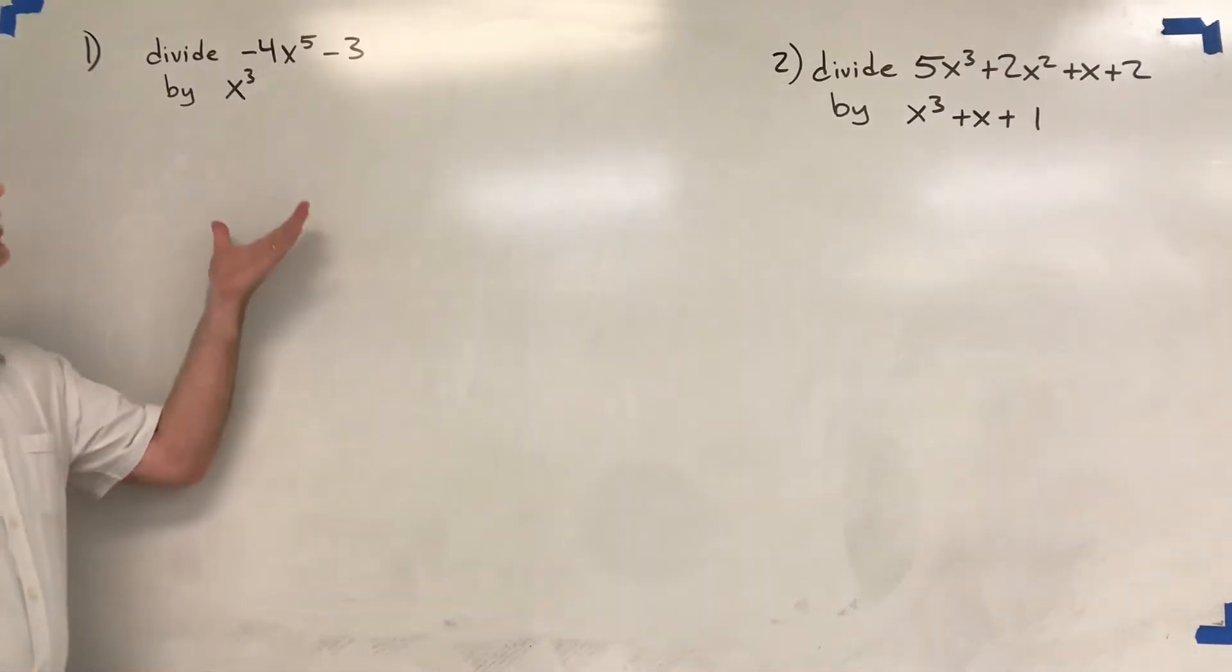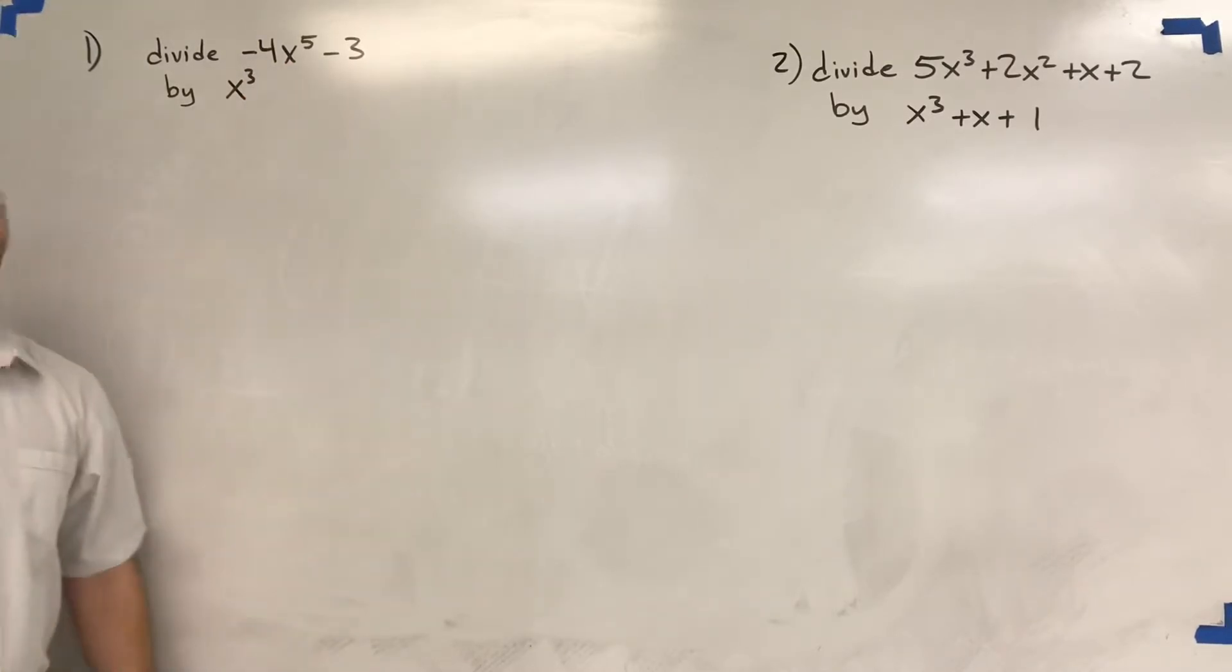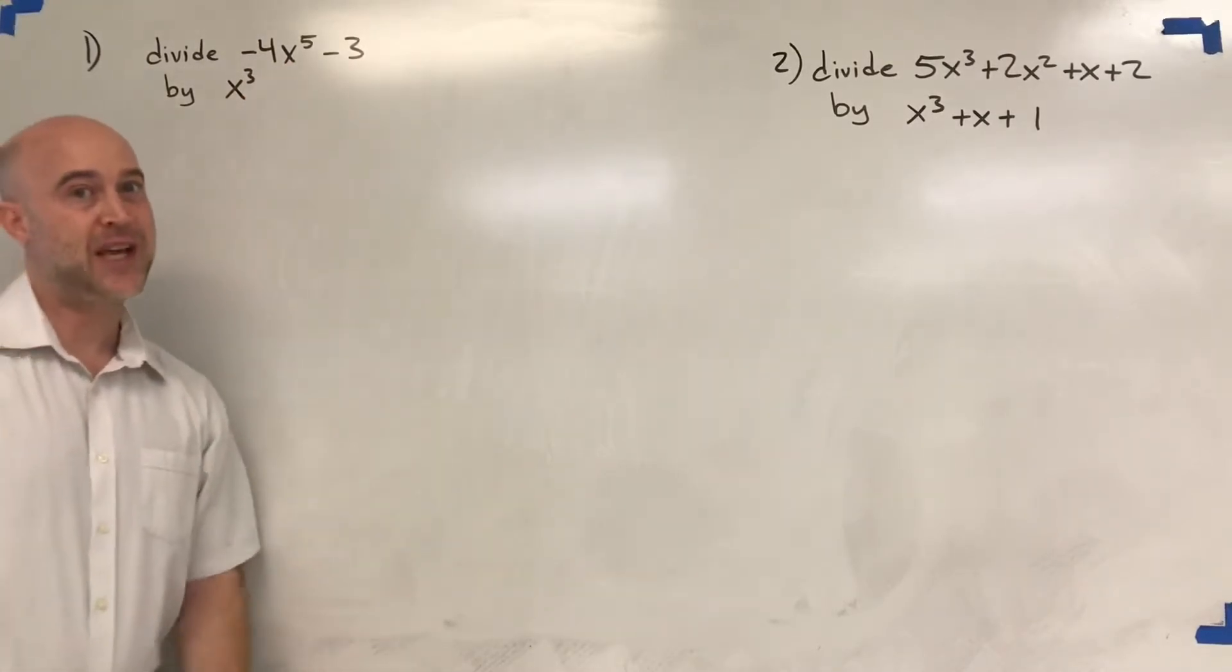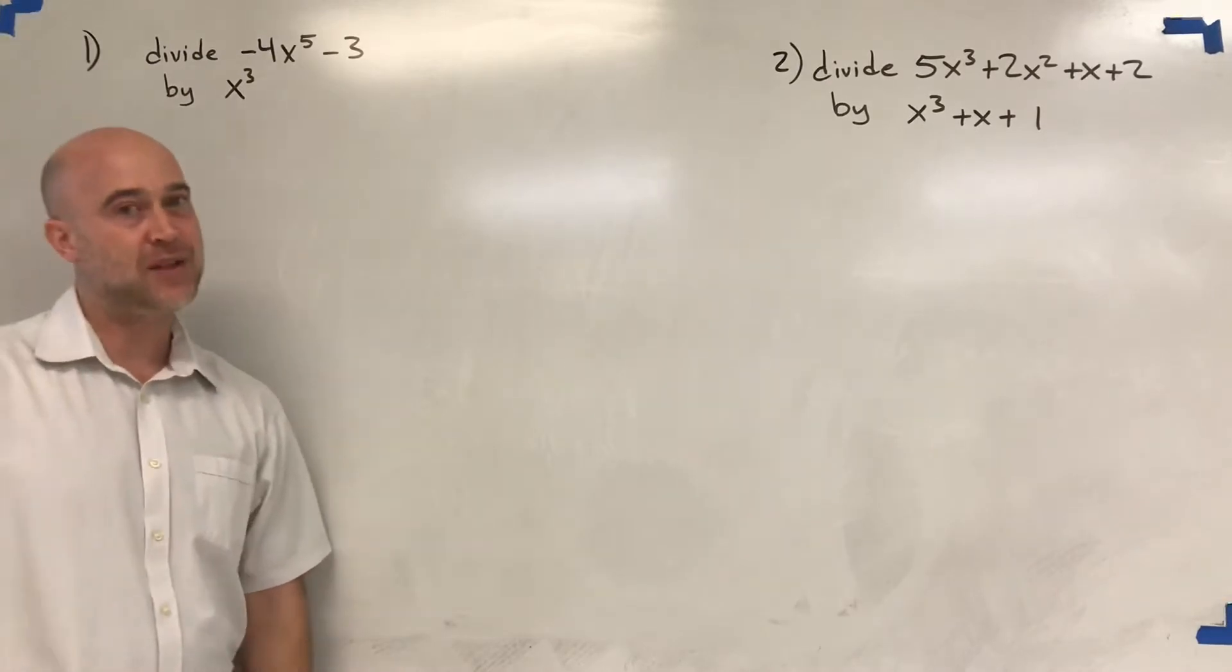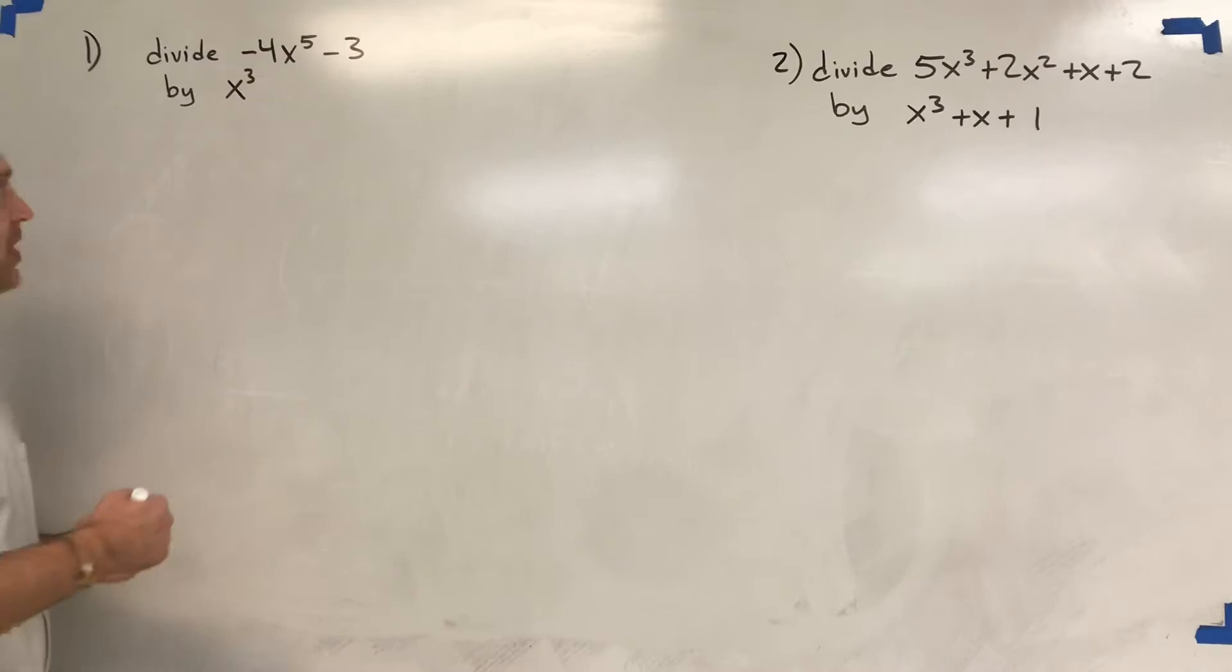We are asked to divide negative 4x to the 5th minus 3 by x cubed. Personally, I think a long division style is a little bit easier. It kind of makes more sense with the flow, so that's what I'll be using.